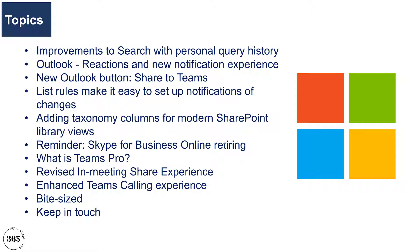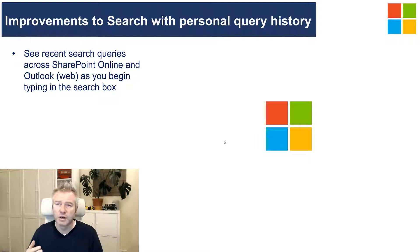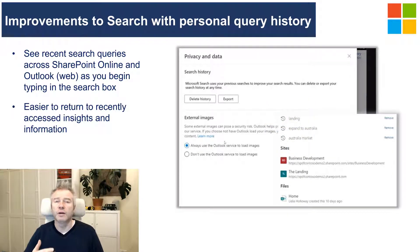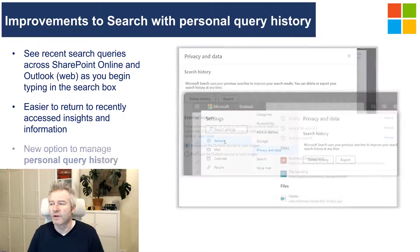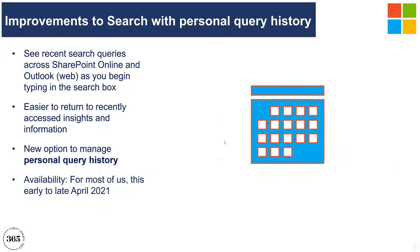We're starting with improvements to search with personal query history. It's going to show your search history across SharePoint Online and Outlook for the web, so as you start to type it shows things you've looked for in the past. It saves you having to remember or bookmark stuff. In settings you can manage this and look back at your personal history to find something previously seen. This is coming out early to late April 2021.